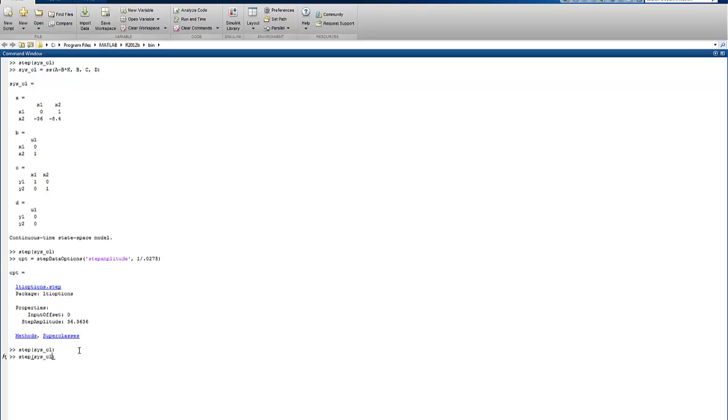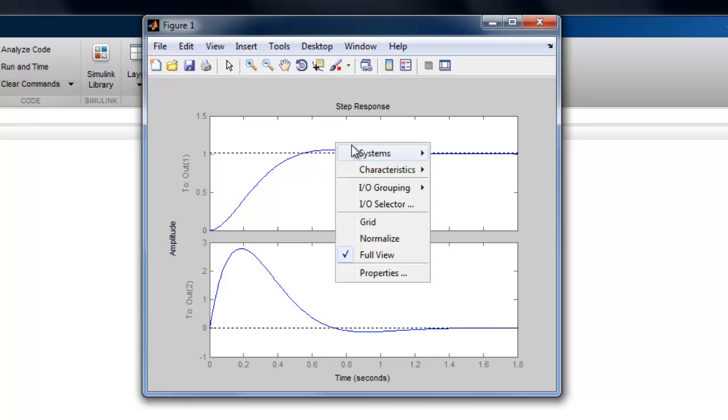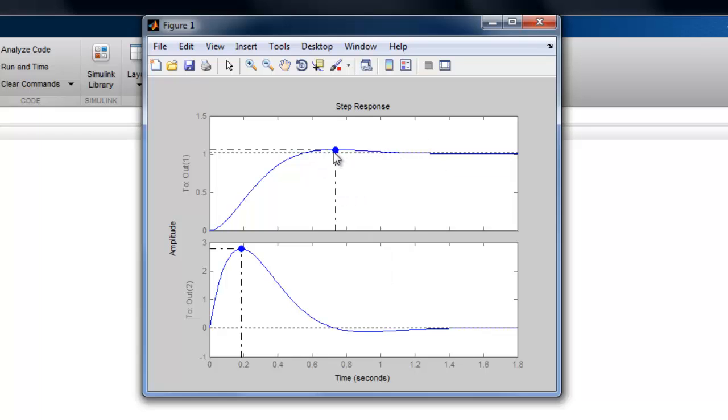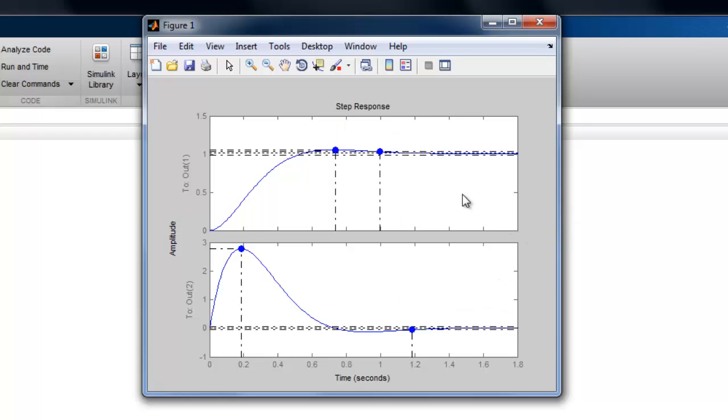Now if I run the step system on the closed-loop system and pass in the options I've just defined, I should get a step response that has the same performance characteristics as far as max overshoot, settling time, and rise time. But notice the final value is closer to 1.